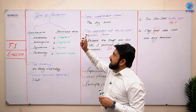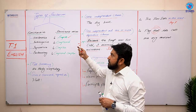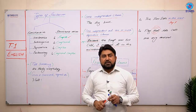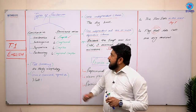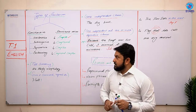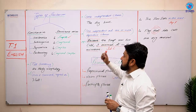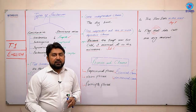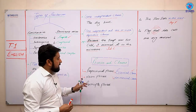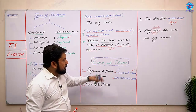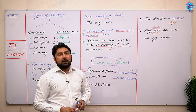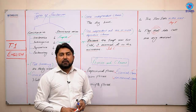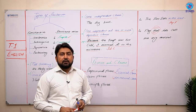So, types of sentences mein two categories hain — function wise aur structure wise. Function wise mein declarative, imperative, interrogative, aur exclamatory. Structure wise mein simple, compound, complex, aur compound-complex. Humne phrases aur clauses bhi discuss ki — prepositional, noun, aur participle phrases, aur essential vs non-essential clauses. I hope ke aap logon ke liye aaj ka free content lecture suitable aur useful hoga. Thank you very much, God bless you.